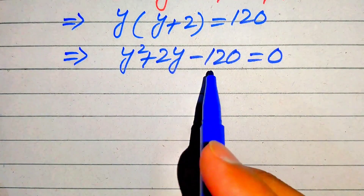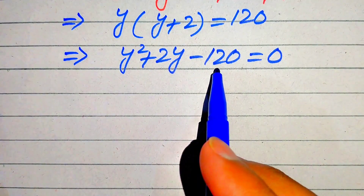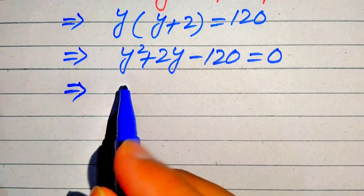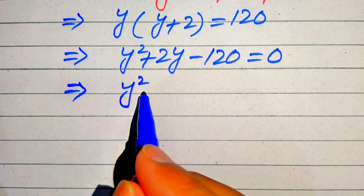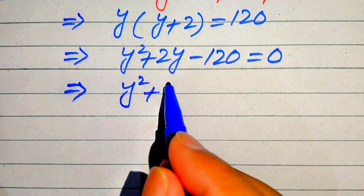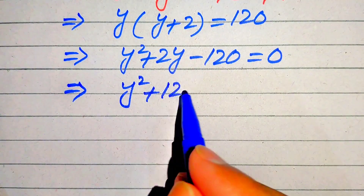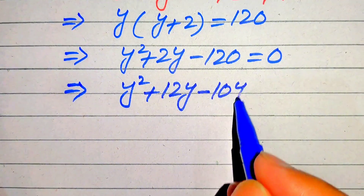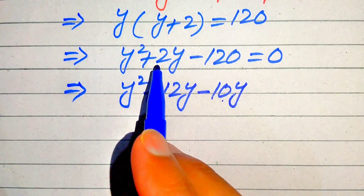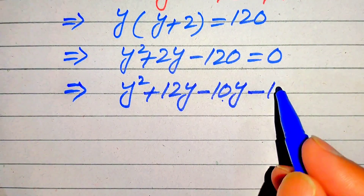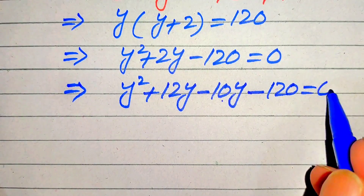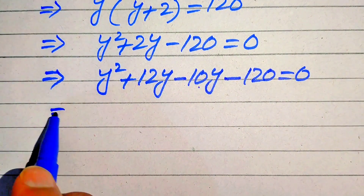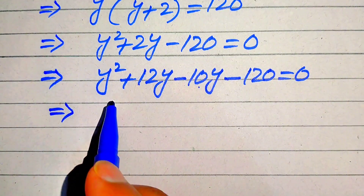We need two numbers whose product is −120 and whose sum is 2. Breaking the middle term, we write +12Y − 10Y, since 12 − 10 = 2 and 12 × (−10) = −120, giving Y² + 12Y − 10Y − 120 = 0.